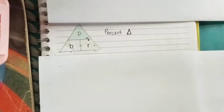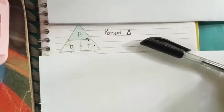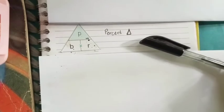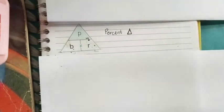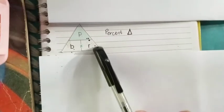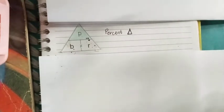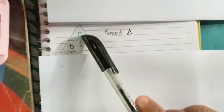I have here the percent triangle. Every percent problem has three elements: the base, the rate, and the part. Now, this time, the unknown is the part.